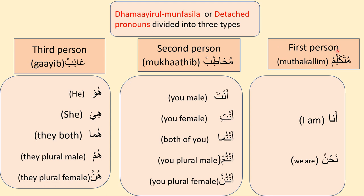What is the meaning of first person? For example, now I am talking to you — I am the first person. Similar to English, in Arabic the first person is 'I am' or 'we are.' Arabic first person pronouns are Ana and Nahnu. Ana meaning 'I' is used for singular, and Nahnu meaning 'we' is used for plural.